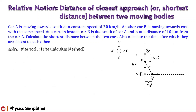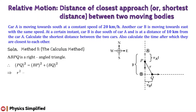According to the figure, BPQ is a right angle triangle. Applying the Pythagorean theorem, we get PQ² = BP² + BQ². Substituting the expressions of each term, we obtain: r² = (y − v_A·t)² + (v_B·t)². We mark this as equation 1.